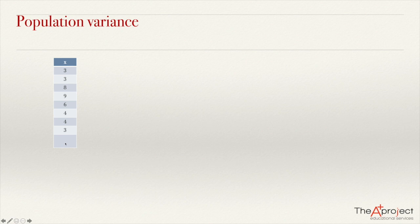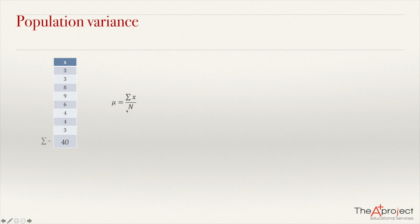So get the mean first. Add together all these values — the answer is 40. Because this is the whole population, I'm going to use the Greek letter mu for the population mean. This will be the sum of all numbers divided by the total number of data. In this case, it will be 40 divided by 8, because we have 8 data. So the population mean is 5.